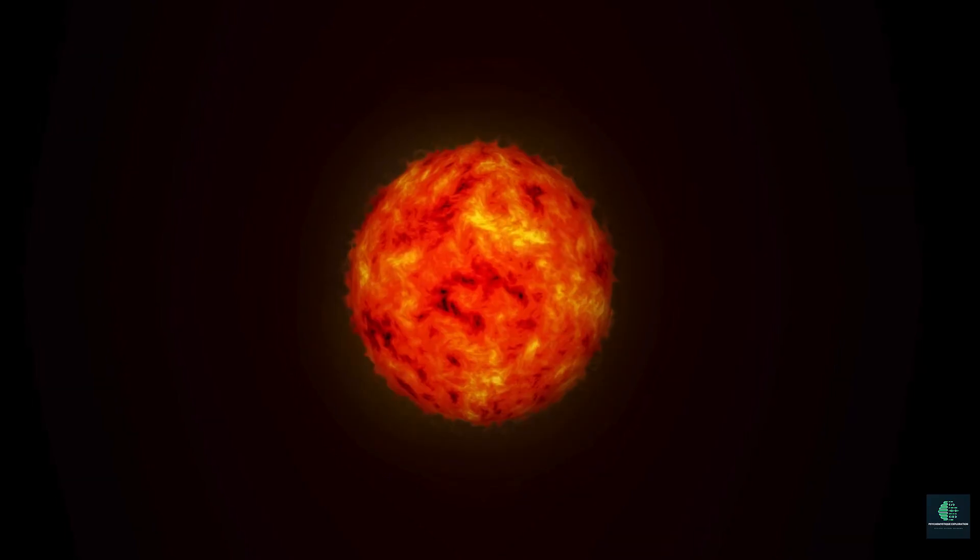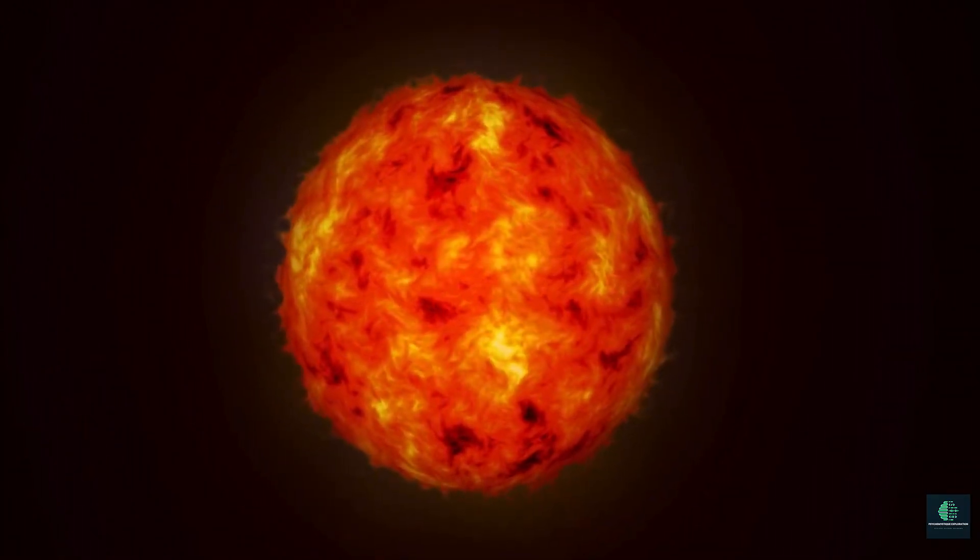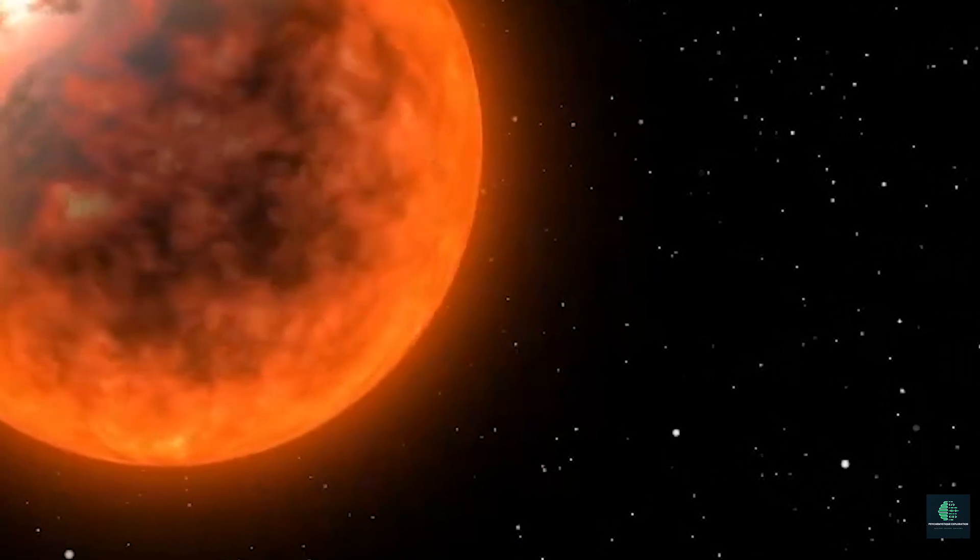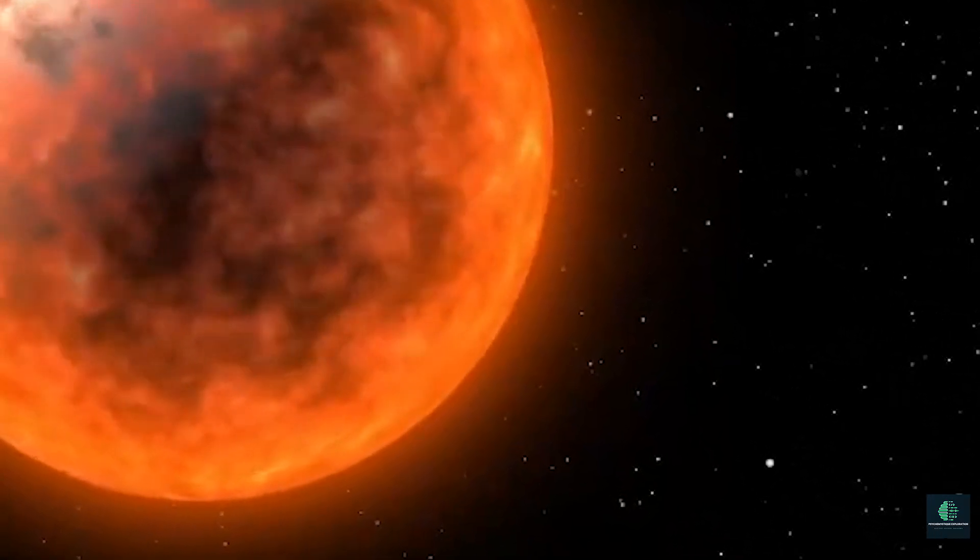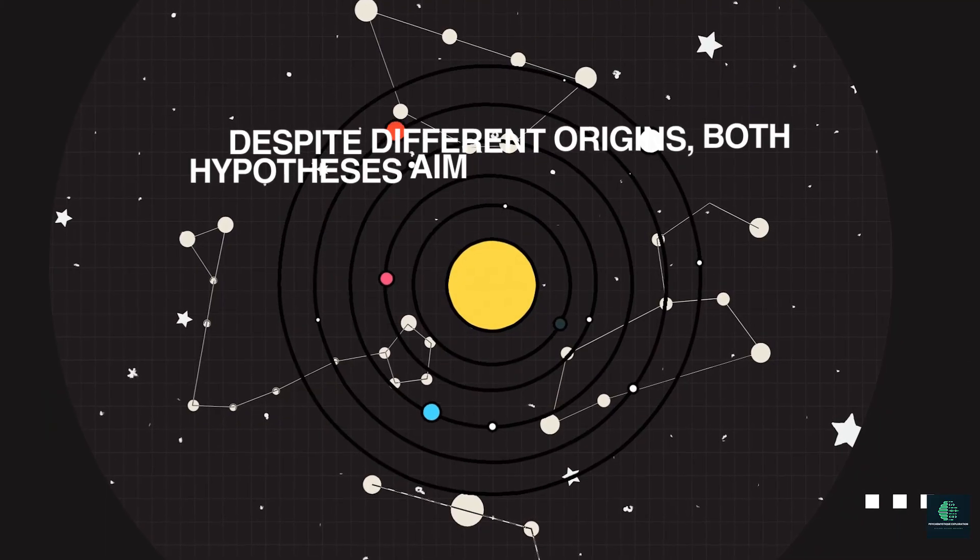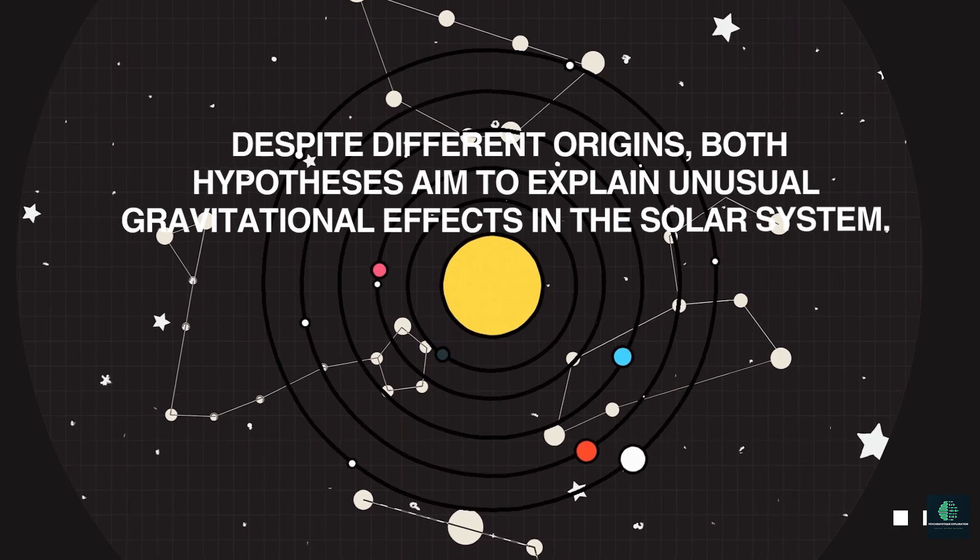Connection to Nemesis: Teich is often confused with Nemesis, another hypothetical object proposed to explain periodic mass extinctions on Earth. While Nemesis is theorized to be a distant companion star, Teich is proposed as a massive planet. Despite different origins, both hypotheses aim to explain unusual gravitational effects in the solar system.